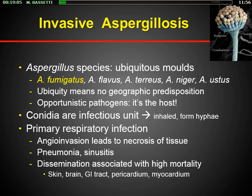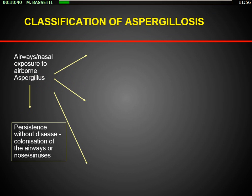Usually we have primary respiratory infection with angio-invasion that leads to necrosis of the tissue, and we can have pneumonia or sinusitis. Especially in patients that are not completely immunocompetent, we can have dissemination — which is associated with high mortality — particularly in the brain, skin, GI tract, pericardium, and myocardium.